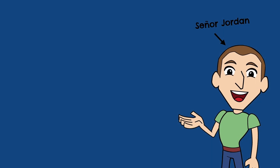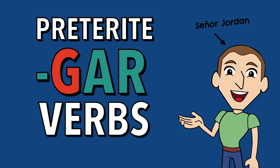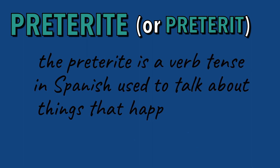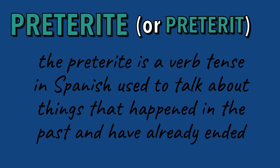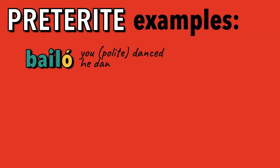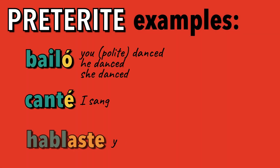Hola, Senor Jordan here. In this video we're going to talk about verbs ending in G-A-R when we change them in the preterite. The preterite is a verb tense in Spanish used to talk about things that happened in the past and have already ended. Some examples are bailé, canté, hablaste.